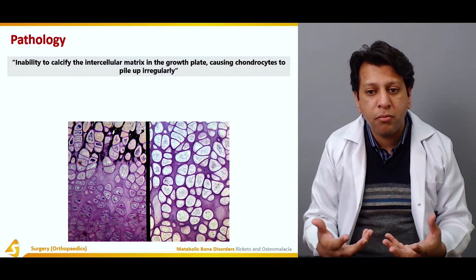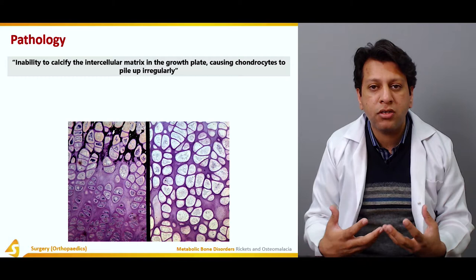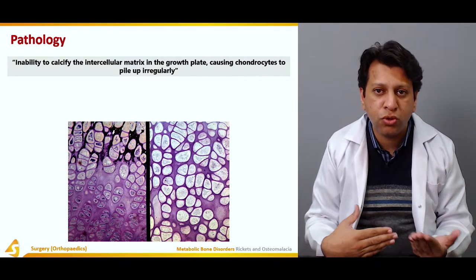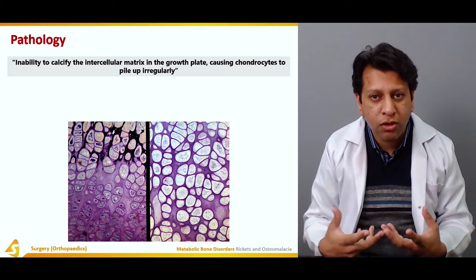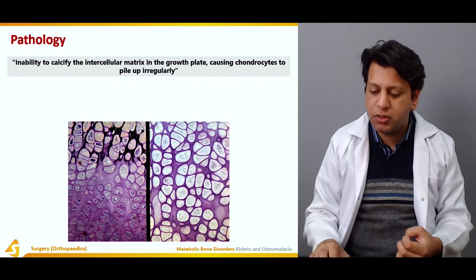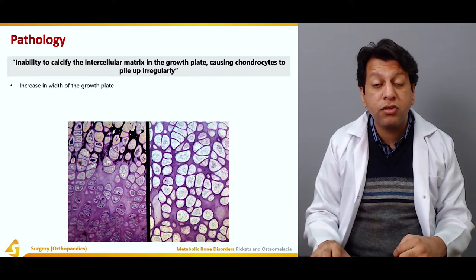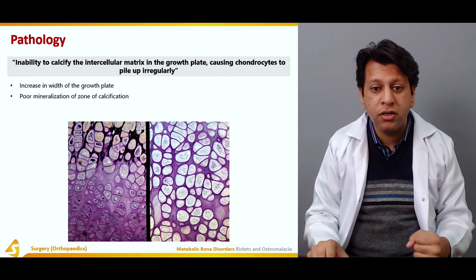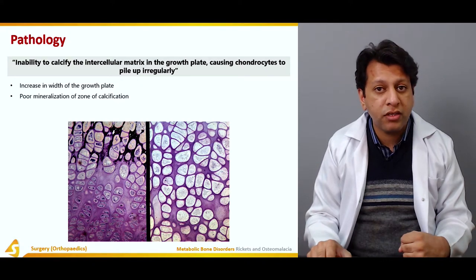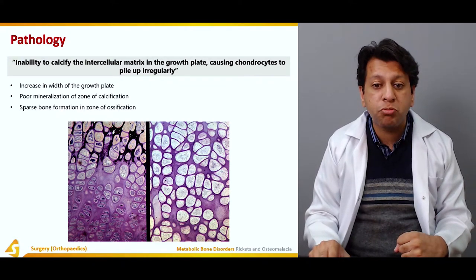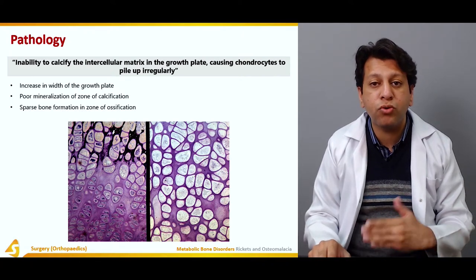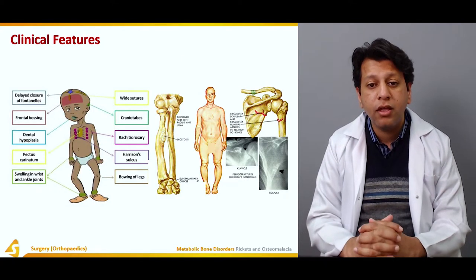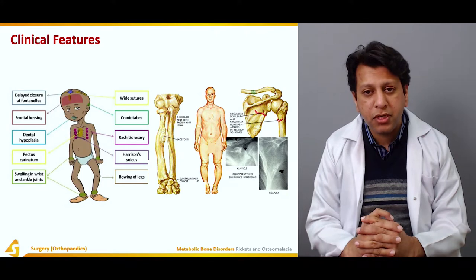The enlarged hypertrophic zone cells become hexagonal and pile up. Chondrocytes do not mature into osteocytes, resulting in defective bone formation. There is an increase in the width of the growth plate because the hypertrophic zone is enlarged. Poor mineralization in the zone of calcification means insufficient calcium is laid down, so chondrocytes are not ossified into mature osteocytes.